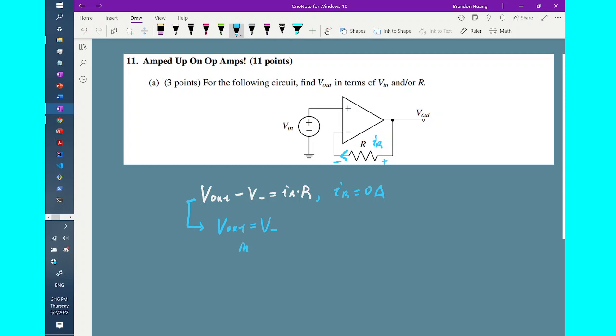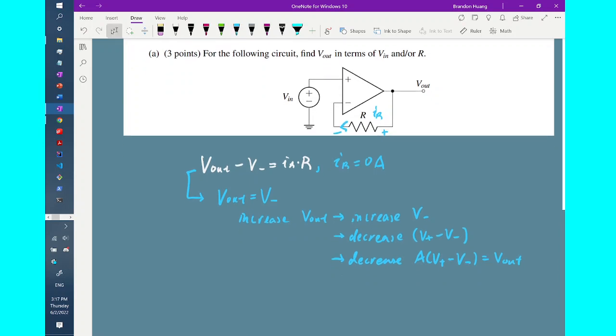So if I increase V_out, I end up increasing V_- as well because they are equal values. If I increase V_-, then I decrease the value of V_+ minus V_-. And if I decrease this value, it's also equivalent to having decreased the op-amp gain times that difference between V_+ and V_-, which means I'm also decreasing the output since the output is defined as the gain times V_+ minus V_-. And therefore, by increasing V_out, I have decreased V_out, which means I have negative feedback in the circuit.